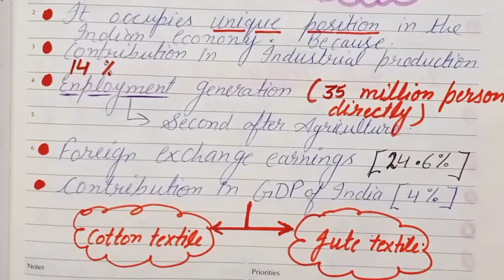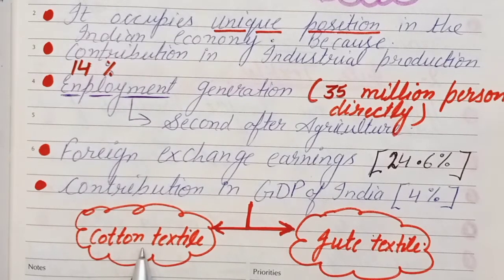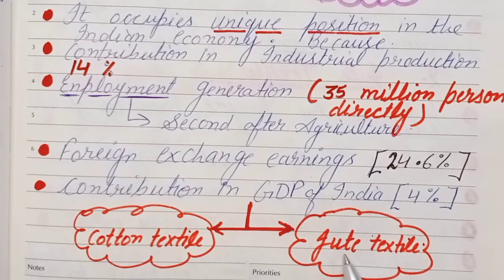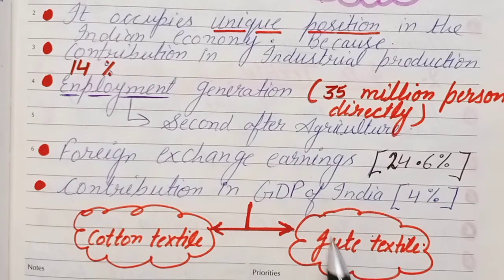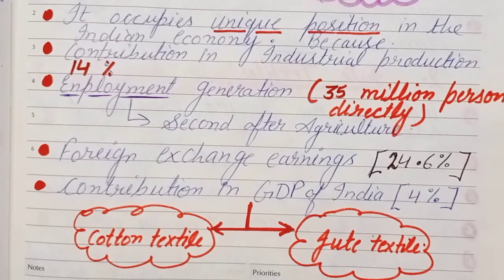In textile industries, there are two types we need to study one by one. First is cotton textile, where products are made from cotton. Second is jute textile, where products like carry bags, sacks, carpets, and ropes are made from jute. This is why textile industry holds a unique position in the Indian economy.